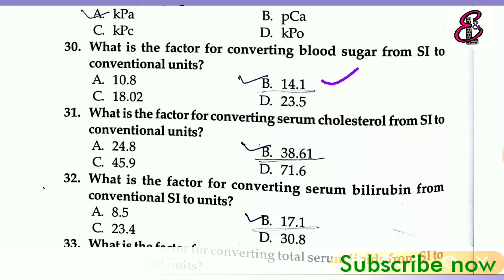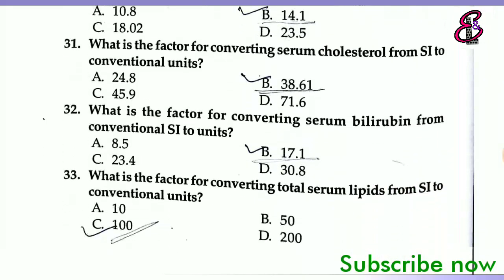Question 31: What is the factor for converting serum cholesterol from SI to conventional units? Answer is 38.61.